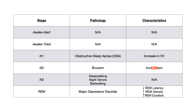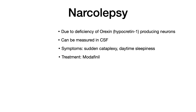Let's wrap up by talking about narcolepsy - a pretty unique sleep disorder increasingly tested on exams. Narcolepsy is due to a deficiency of orexin-producing neurons in the lateral hypothalamus. You might see it written as orexin or as hypocretin-1 - they mean the same exact thing and are interchangeable. You can measure orexin and hypocretin-1 in the CSF, so the answer to an exam question might be decreased hypocretin-1 or decreased orexin in the cerebrospinal fluid - very high yield.